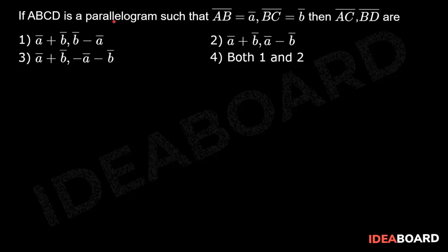If ABCD is a parallelogram such that AB bar is equals to vector a, BC bar is equals to vector b, then find AC bar and BD bar.